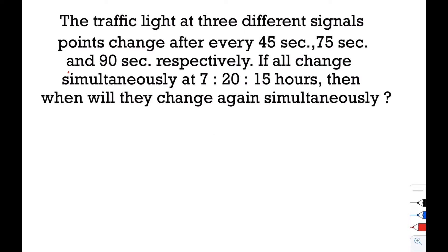Traffic lights at three different signal points change after every 45 seconds, 75 seconds, and 90 seconds respectively. If all change simultaneously at 20 minutes and 15 seconds past seven, then when will they change again simultaneously?